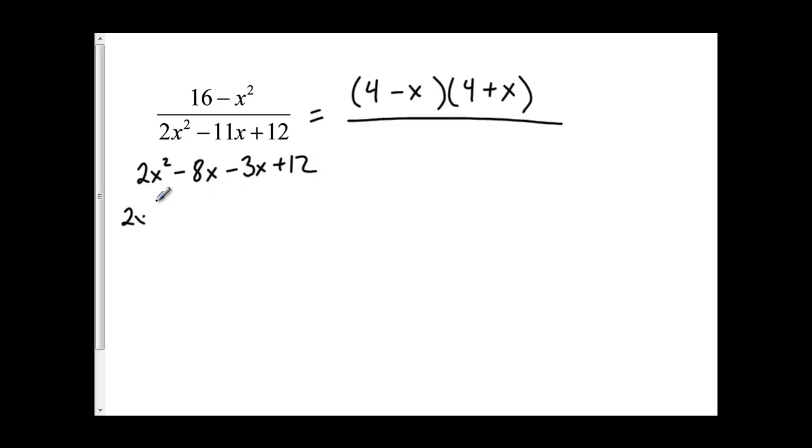When I simplify out, I get 2x and x minus 4. And I divide out a negative 3, and I get x minus 4. So my factors here are 2x minus 3 and x minus 4.